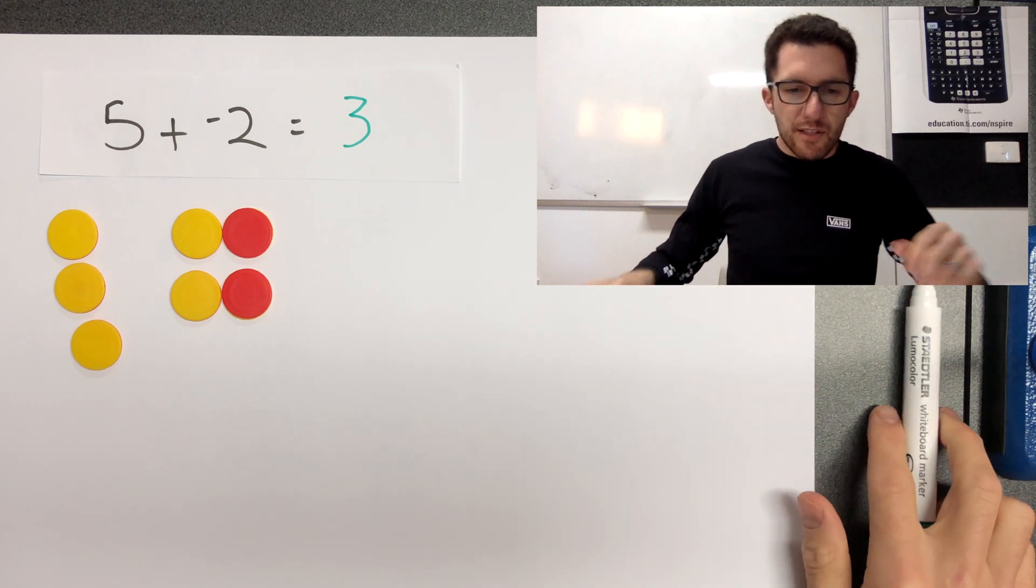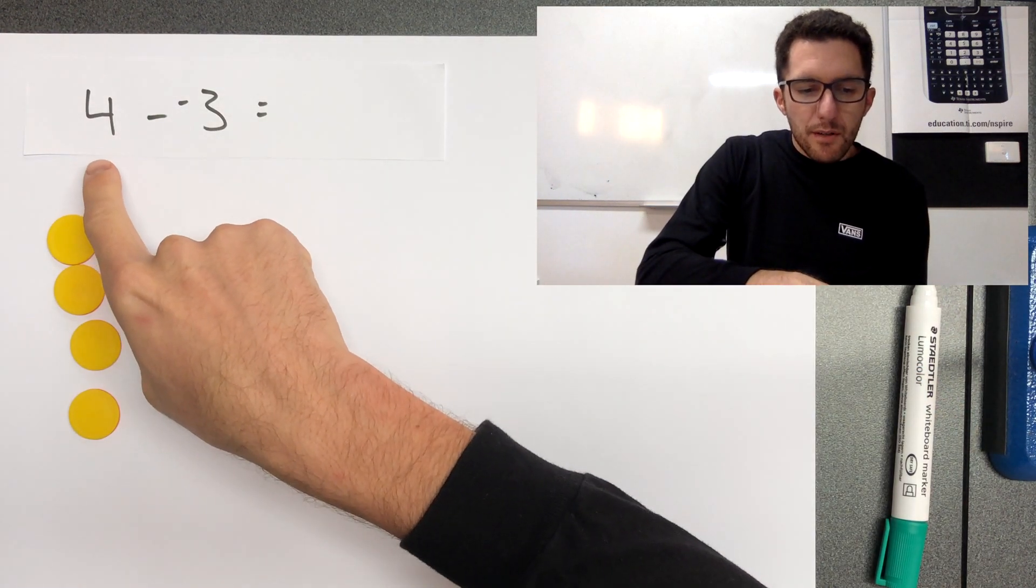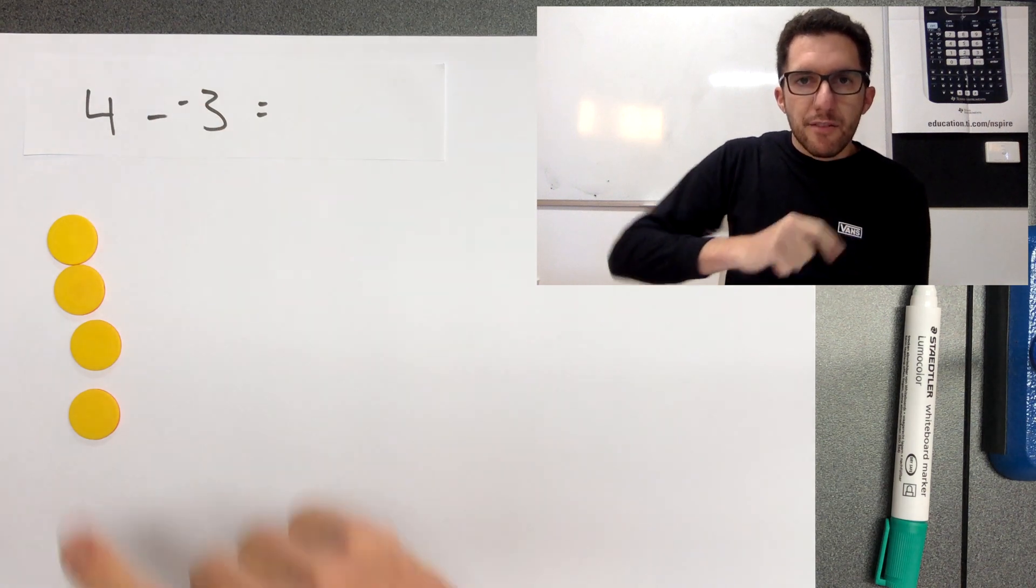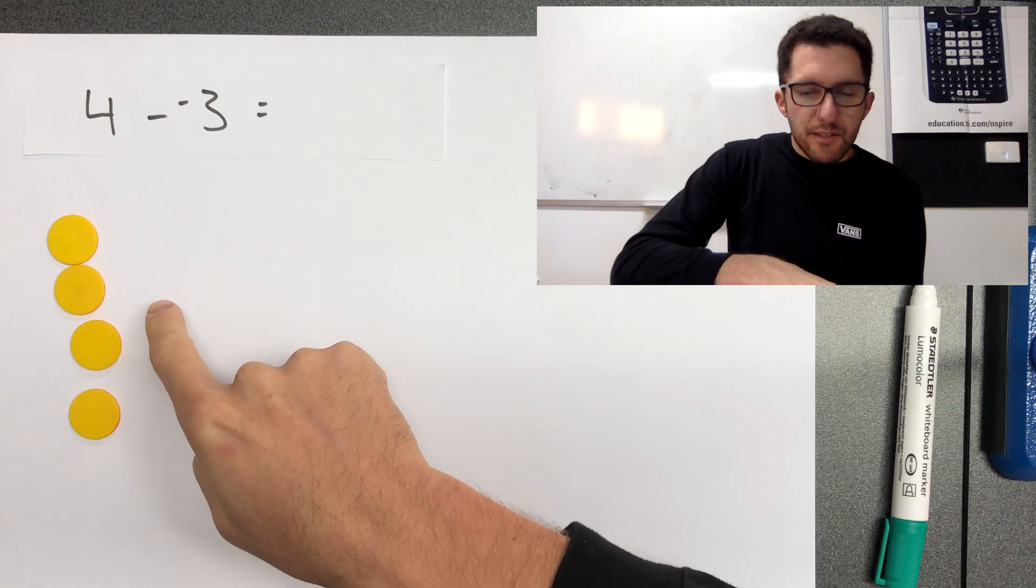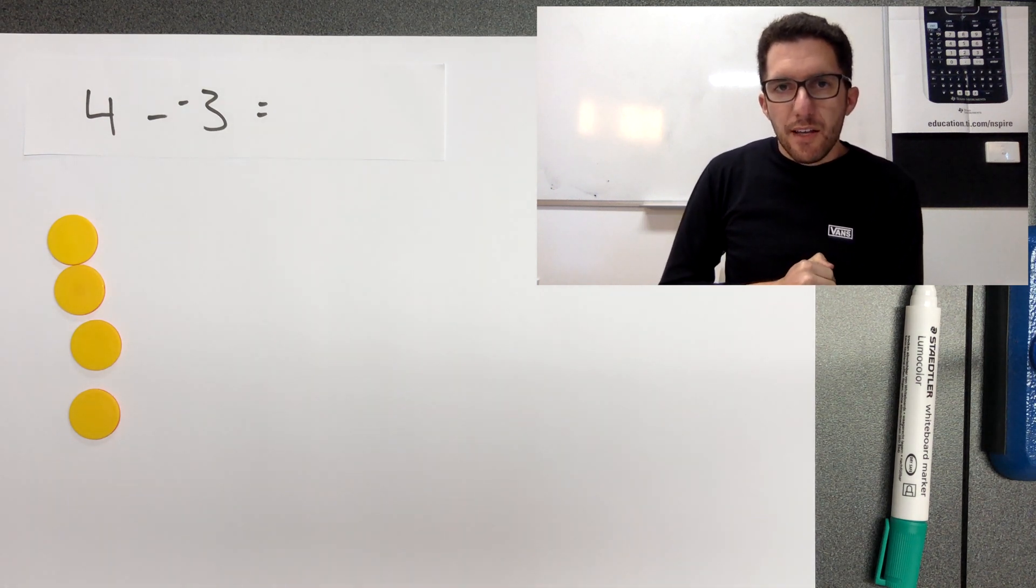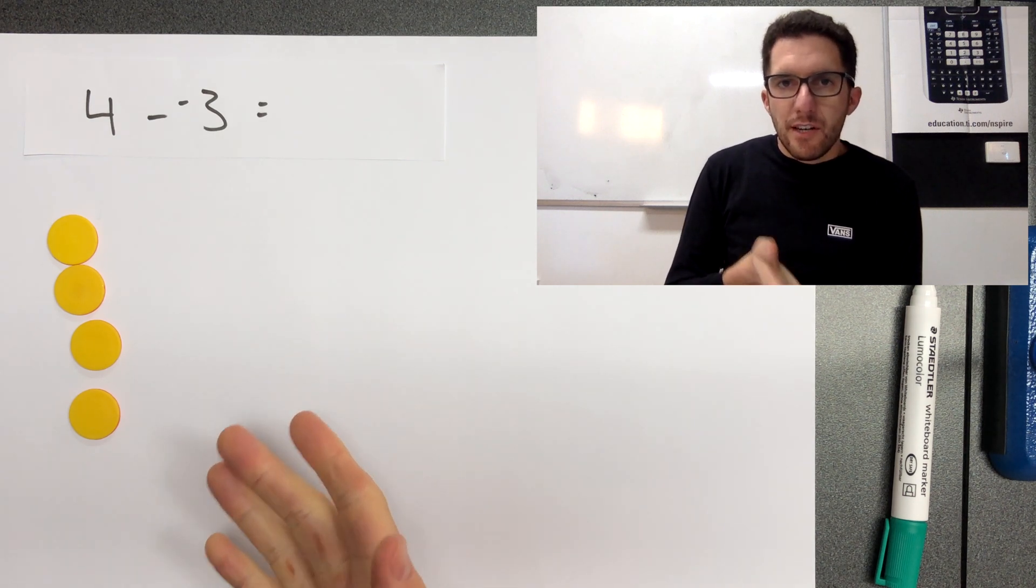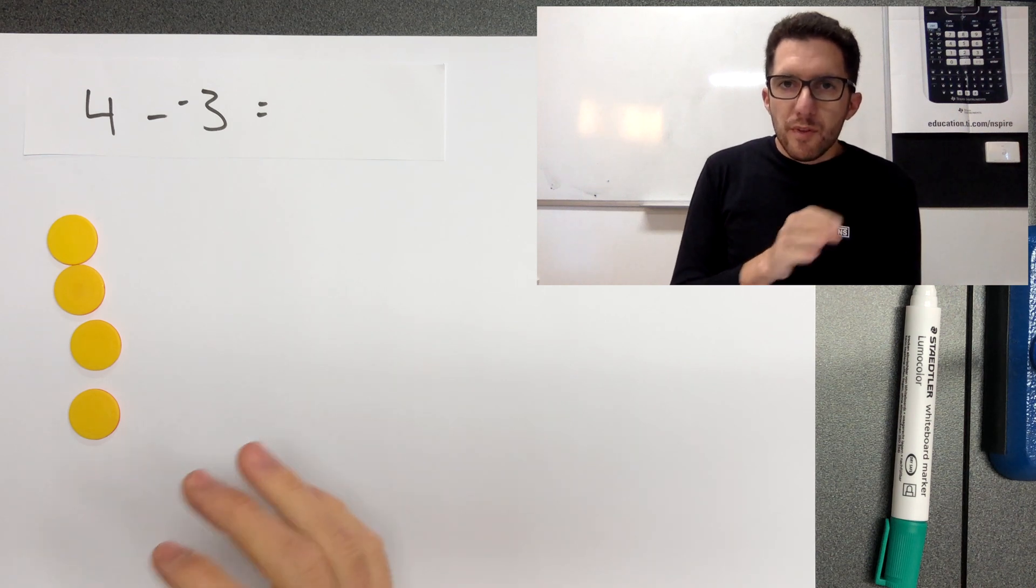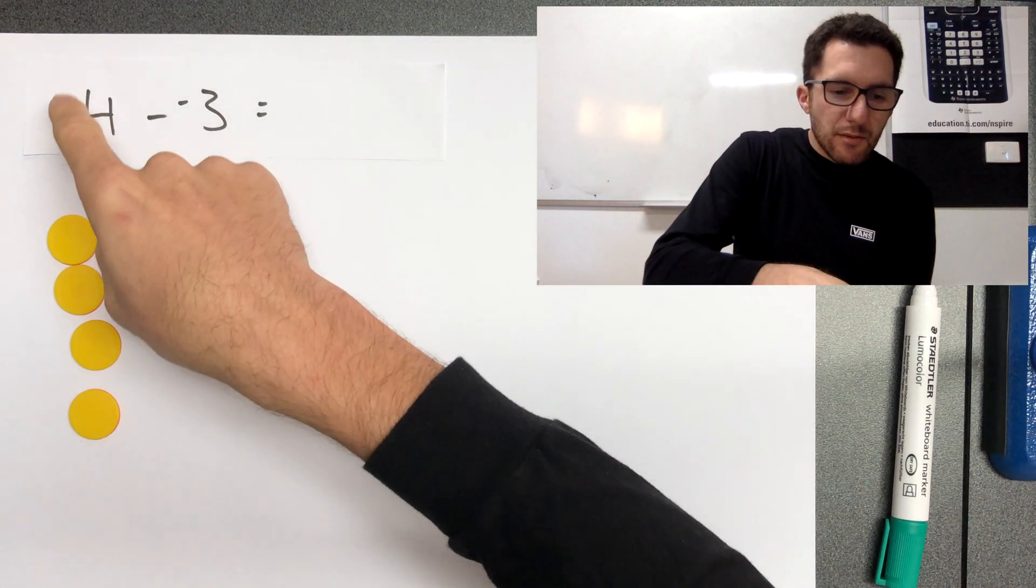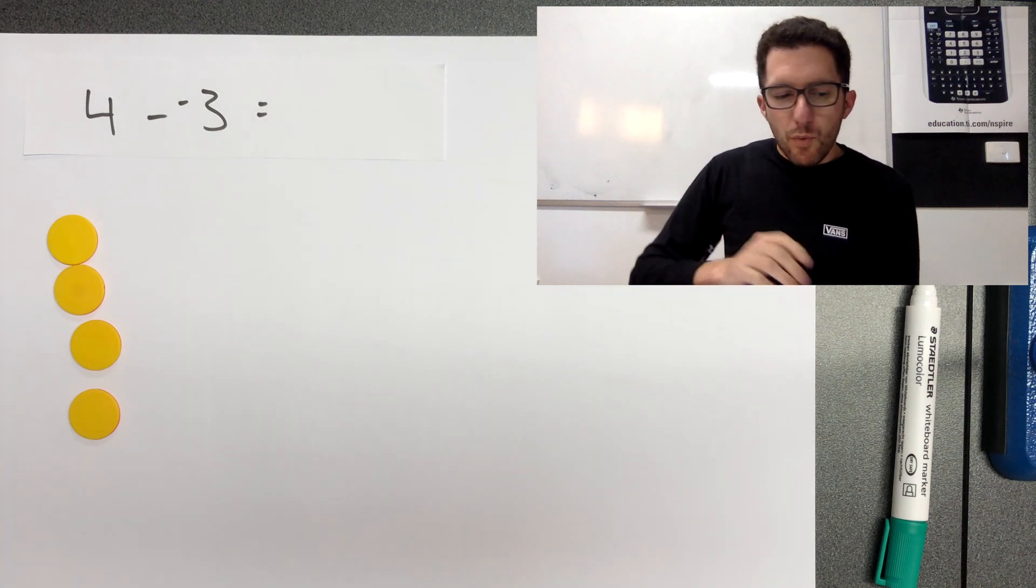Let's have a look at another example. All right. So in this one, we have four subtract negative three. So four subtract, we need to take away three negative counters. But you can see we don't have any negative counters to start with. So we need to go back to the problem at the start of this video. How can we represent four in a different way?